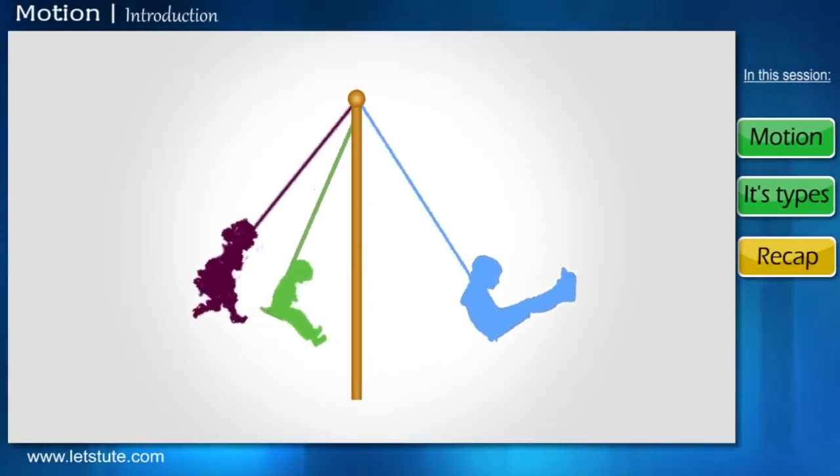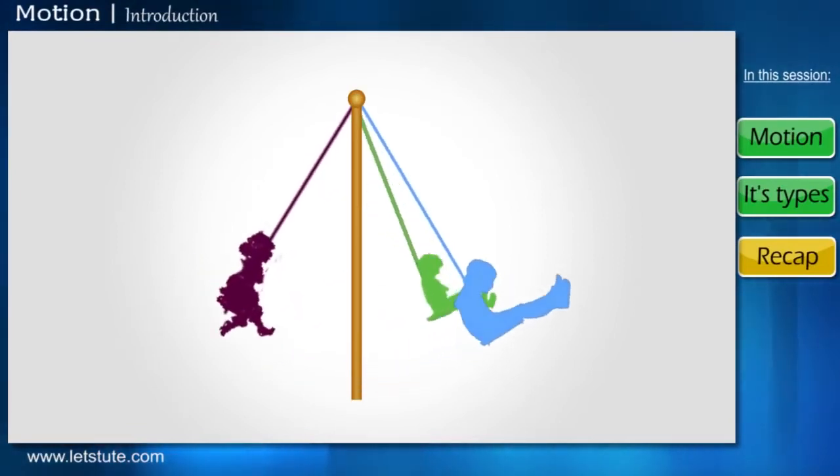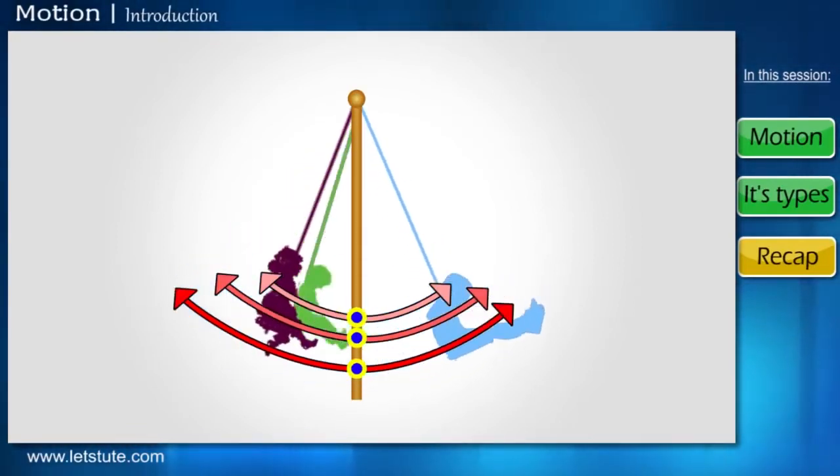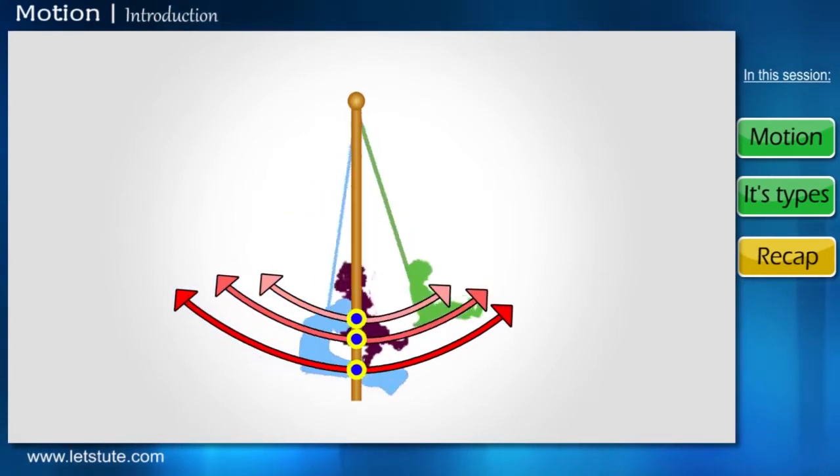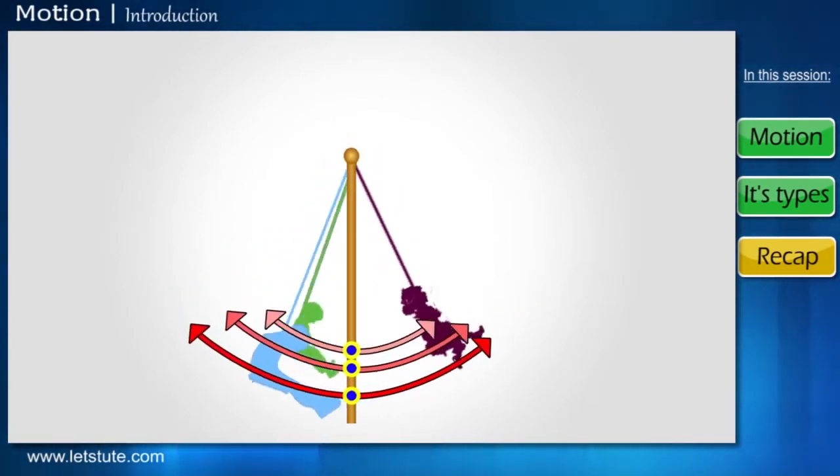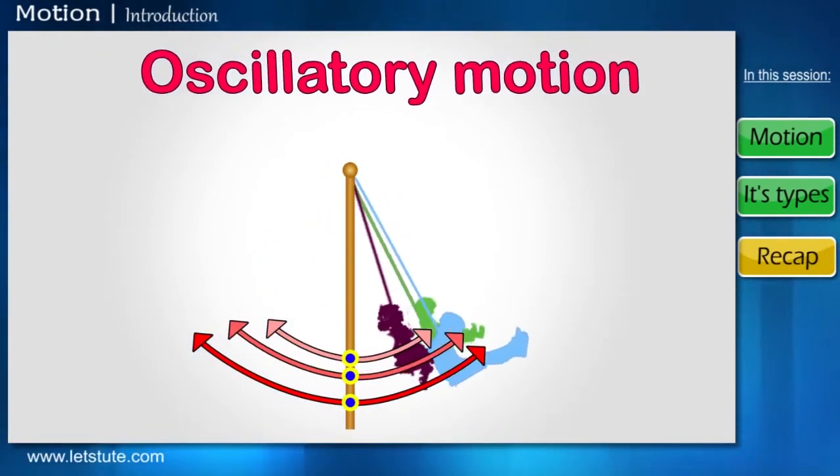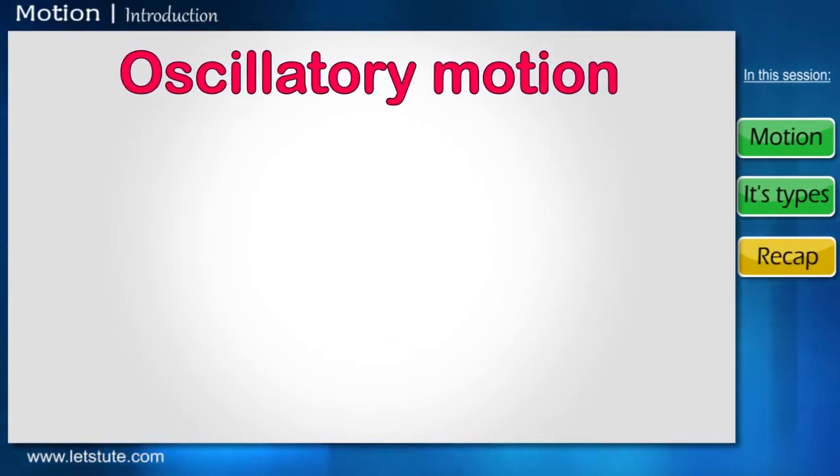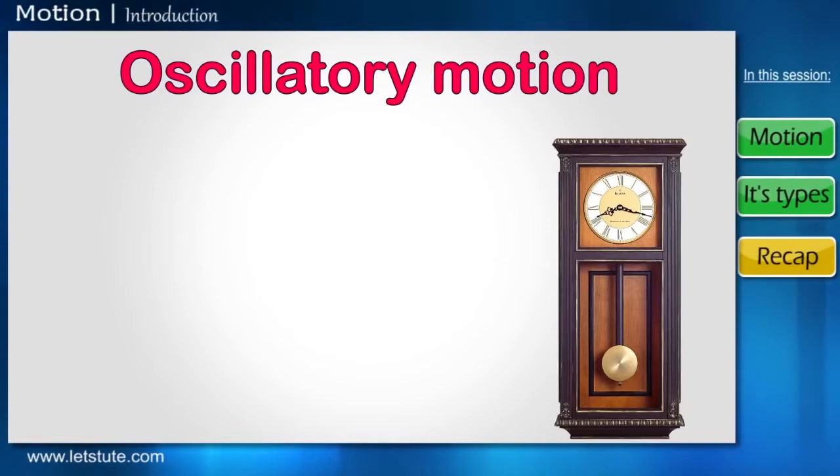Now if we look at another bunch of kids who are swinging, we see that they are moving back and forth from a particular point, the center. This repeated motion of a swing going back and forth is known as oscillatory motion. Where else can we see oscillatory motion? We can see such a motion in the pendulums of clocks, such as the grandfather's clock.